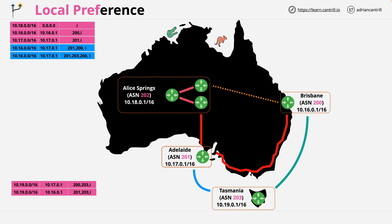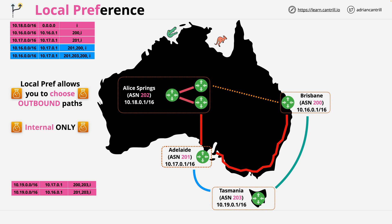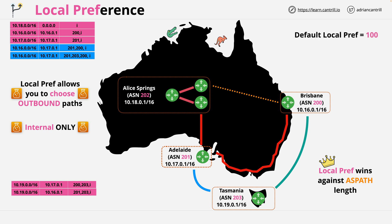So what is local preference, when is it used, and why does it matter? Local preference allows you to choose outbound paths for a given destination — it's a feature used for outbound traffic from you to somewhere else. It's also internal only; it only functions inside your AS, in this case inside Alice Springs. It's exchanged internally with routers within your autonomous system but not externally with other autonomous systems. Importantly, local preference wins against AS path for route choice — it's the highest priority when comparing the two. The default is 100, and the path with the highest local preference is preferred.